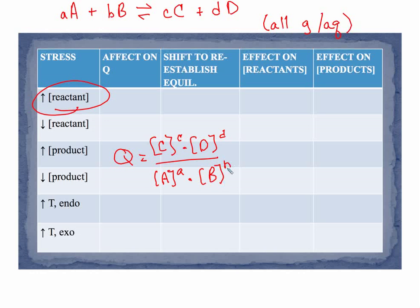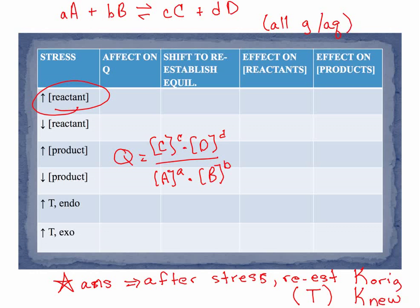First off we're going to talk about the effect on Q and then we want to look at the effect on the actual concentrations. When we're answering this, and I'm not going to go through all of these in detail, I'm going to give you a copy of the teacher notes, but when we are answering this, the answer is about what happens after the stress. After the stress, how are we going to re-establish equilibrium? For most of these we're going to re-establish the original K. If it's a temperature effect, we're going to re-establish a new K value because our equilibrium constant is dependent on temperature.